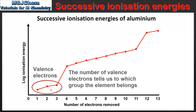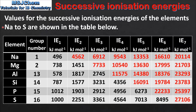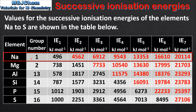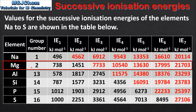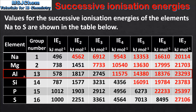This table shows values for the successive ionization energies of the elements sodium to sulfur. Starting with sodium, which is located in group 1, we see a large increase in ionization energy after the first ionization, telling us that sodium has 1 valence electron. Magnesium is a group 2 element with 2 valence electrons, and the large increase occurs after the 2nd ionization. For aluminium, a group 13 element with 3 valence electrons, we see the large increase after the 3rd ionization.